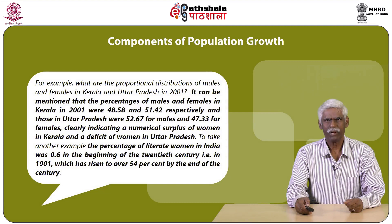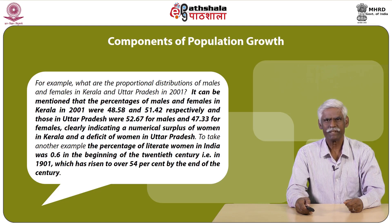For example, the percentage of males and females in Kerala in 2001 were 48.58 and 51.42 respectively, and those in Uttar Pradesh were 52.67 for males and 47.33 for females, clearly indicating a numerical surplus of women in Kerala and a deficit of women in Uttar Pradesh. To take another example, the percentage of literate women in India was 0.6 in 1901, which had risen to over 54 percent by the end of the 20th century.